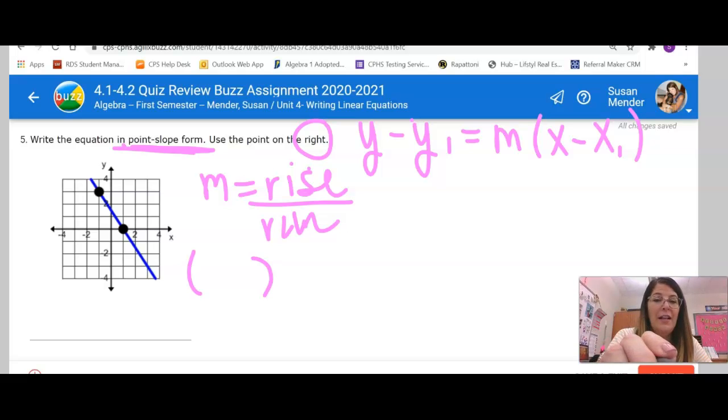Now, at first glance, when I look at this graph, I can tell it is a line that is going negative. It's going downhill. So when I get done, I better get a negative for my slope.